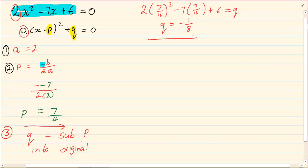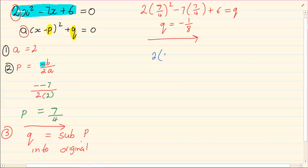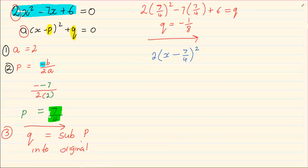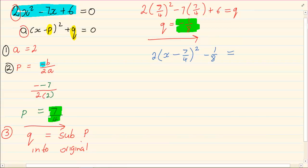Now how do we rewrite it? We are going to say 2 times (x minus 7 over 4) all squared plus q, which is minus 1 over 8. This is equal to 0. When you are doing completing the square, you have to get the equation into standard form so it will equal to 0 before you start.